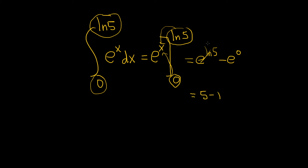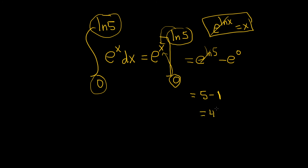This is a formula: if you have e to the natural log of x, this equals x. This is a super powerful formula — you can basically think of these as canceling. So 5 minus 1 gives us 4, and that would be the answer to this definite integral. I hope this video has been helpful.